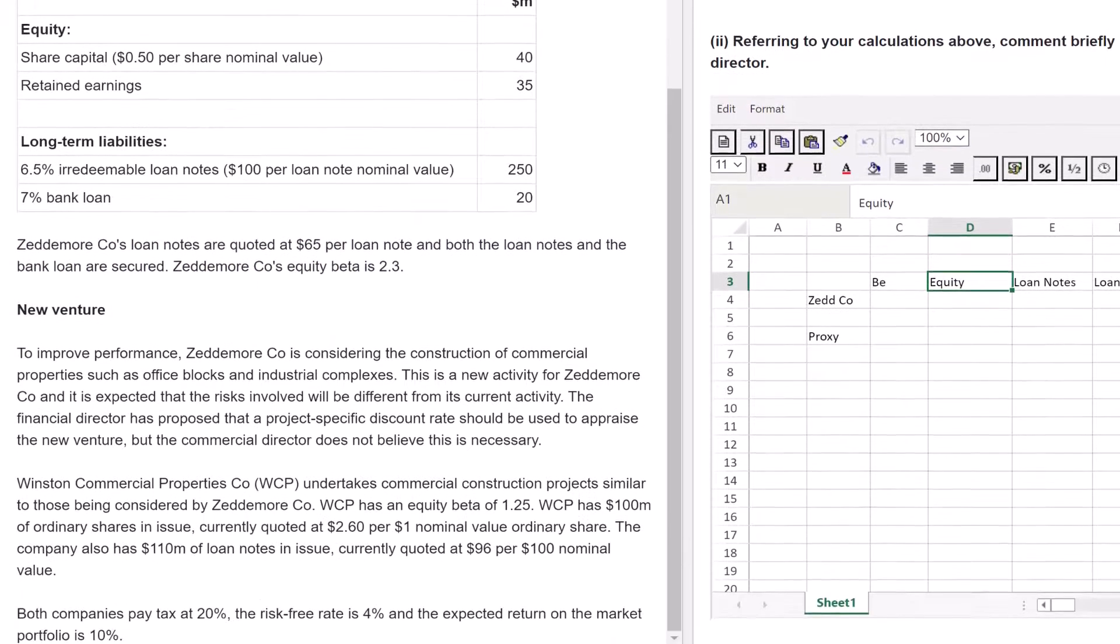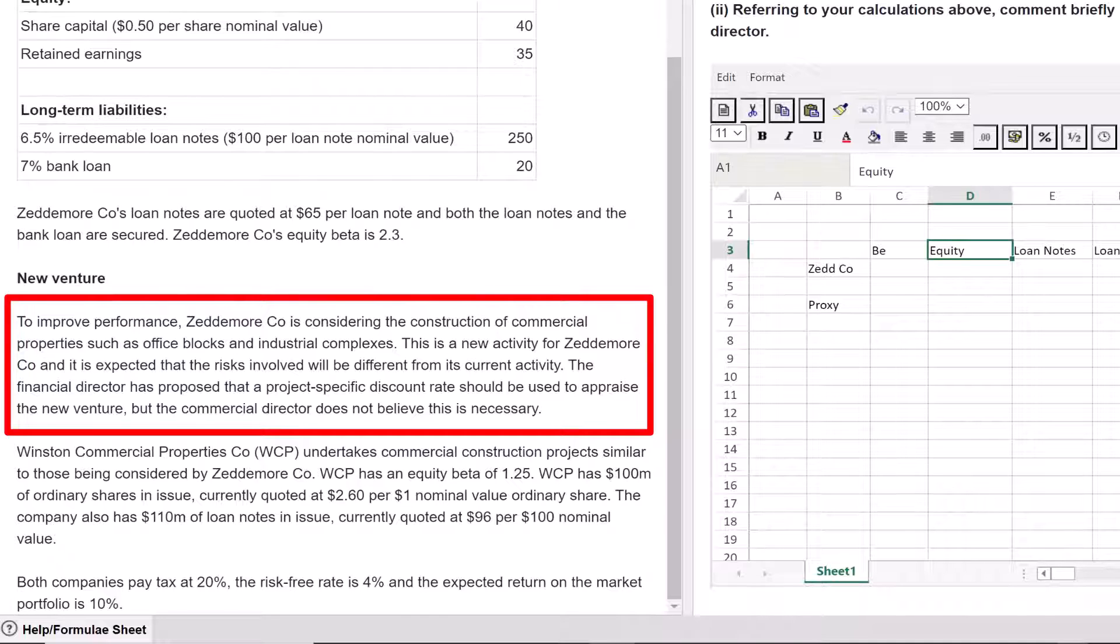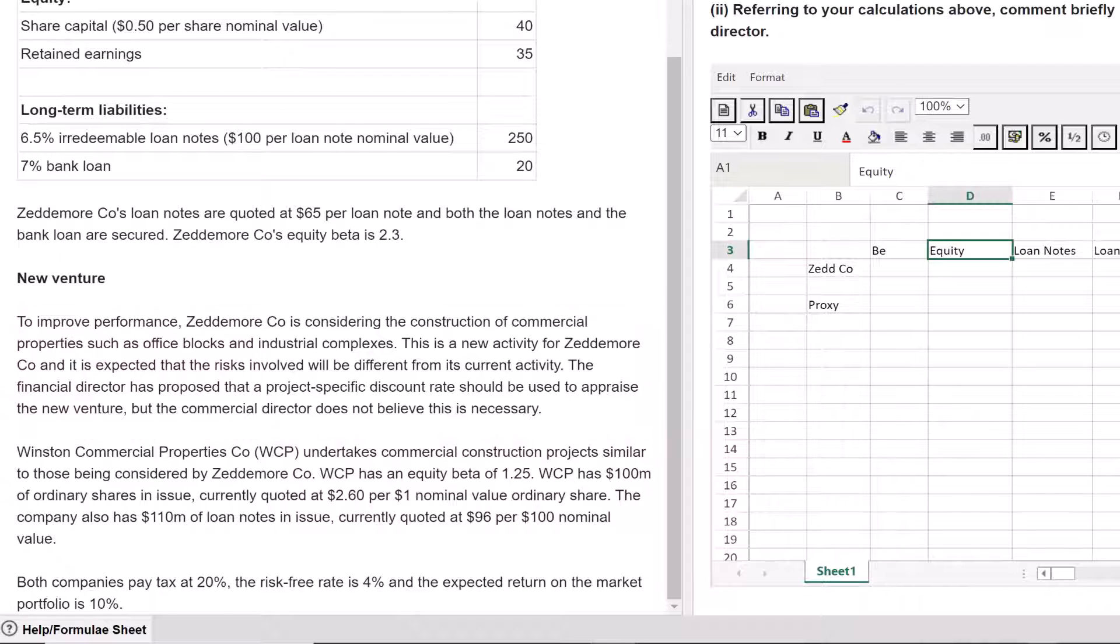To improve financial performance, Zeddymore company is considering the construction of commercial properties, moving from office blocks to industrial complexes. This is a new activity, so the risks involved would be different. Hence the reason we're calculating a project-specific discount rate. The financial director wants that, but the commercial director does not believe it's necessary. WCP is in construction projects, so that's going to be our proxy company. They've got an equity beta of 1.25 and they've told us what their current capital structure is. Both companies pay tax at 20%. The risk-free rate is 4% and the expected return on the market is 10%. So we have everything we need.